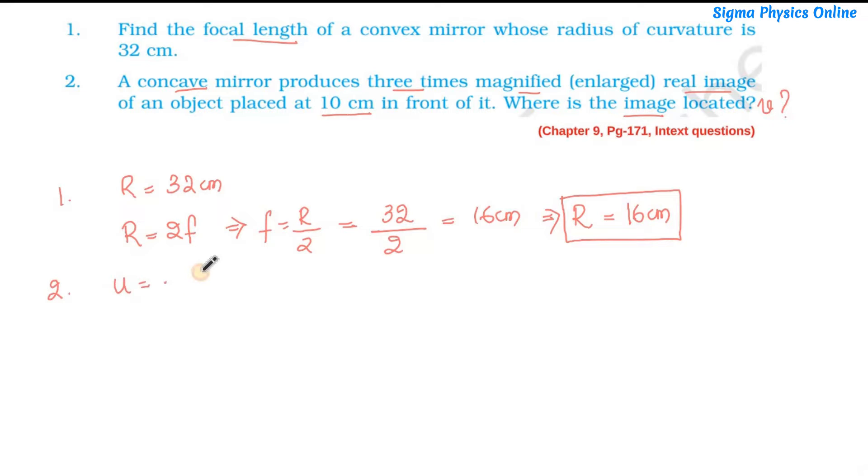The object distance is given as minus 10 cm. Why minus? Because to measure the object distance we have to go towards the left from the pole, that is against the direction of light. So it is minus 10 cm.